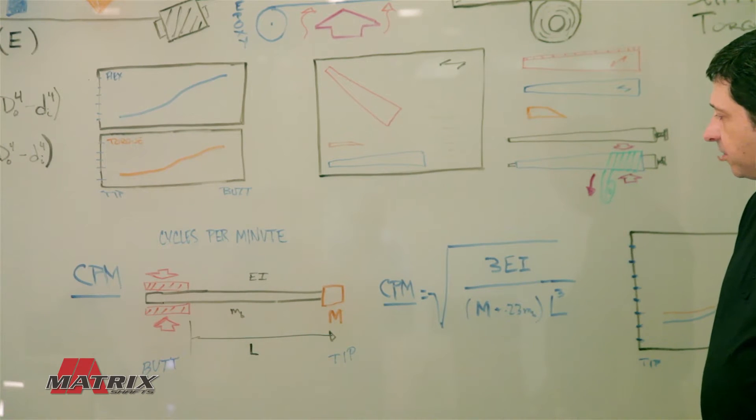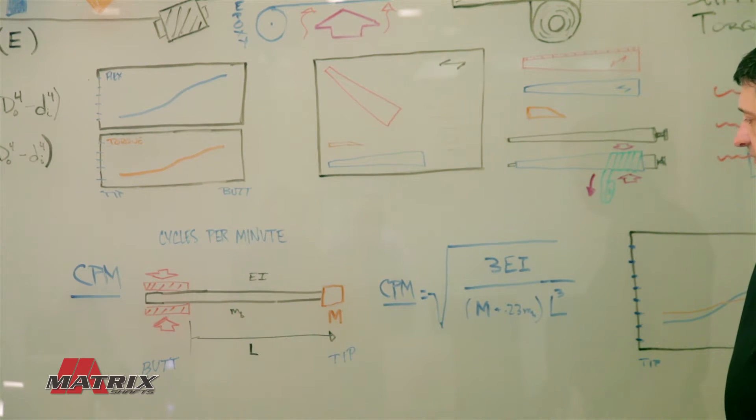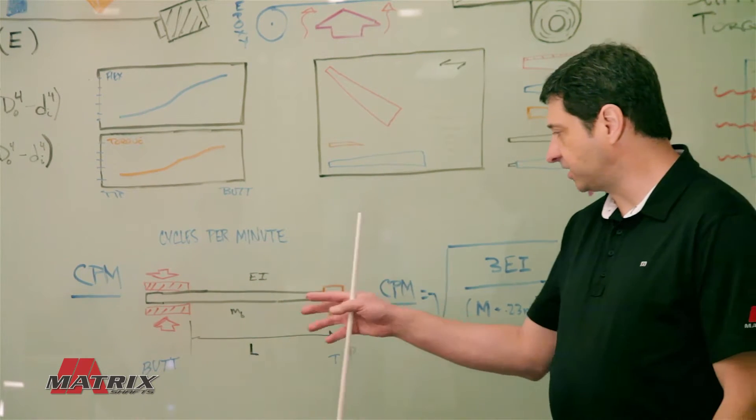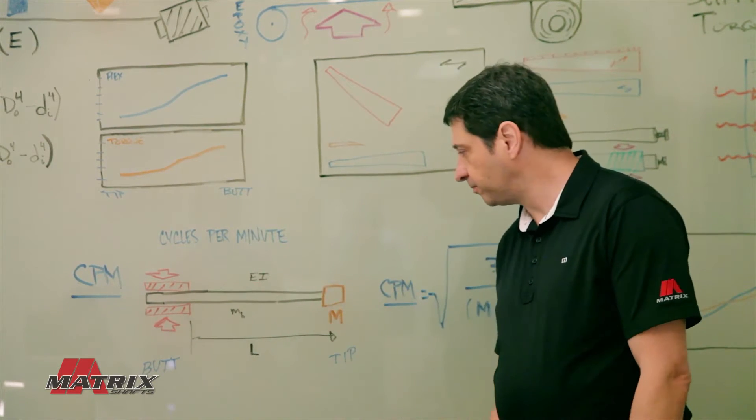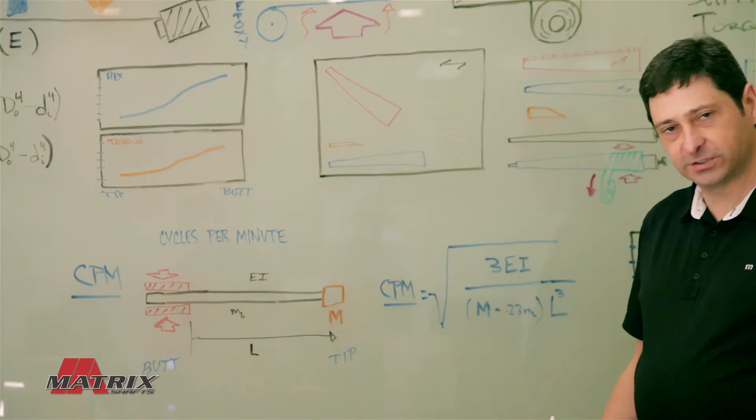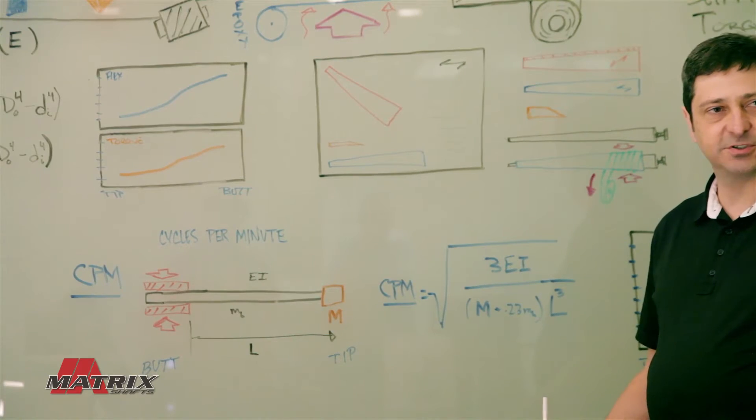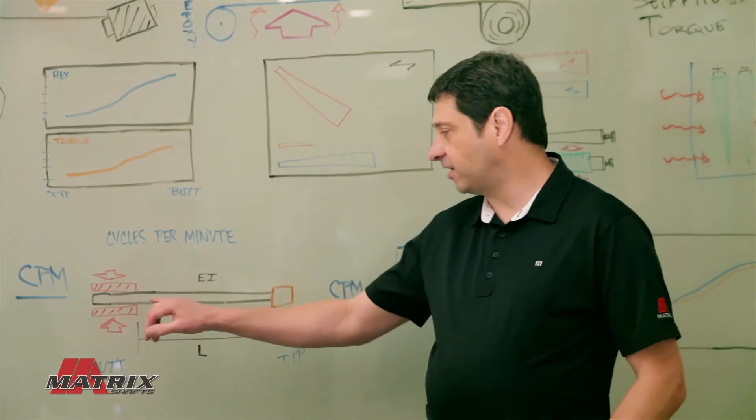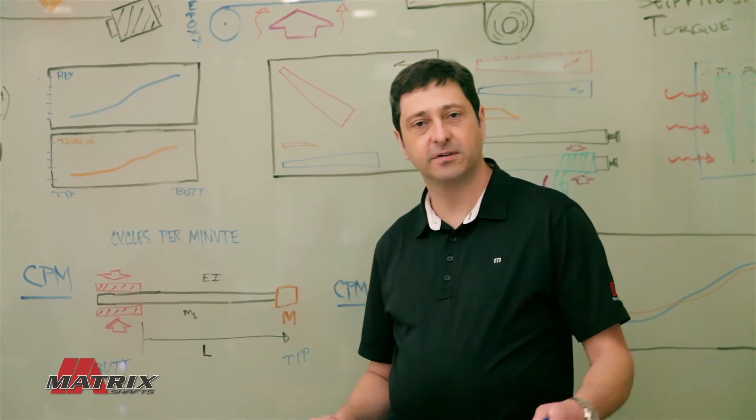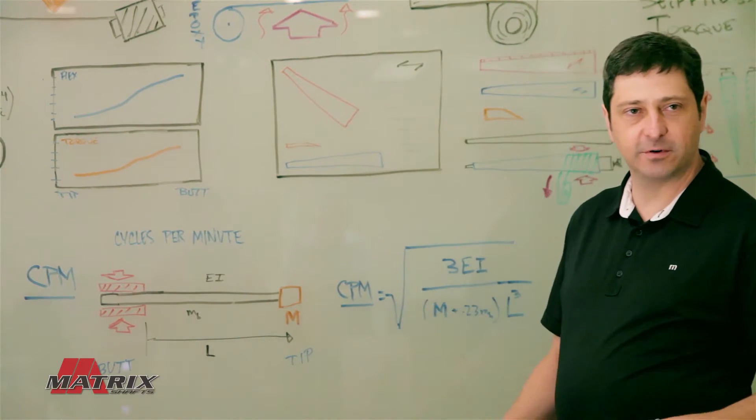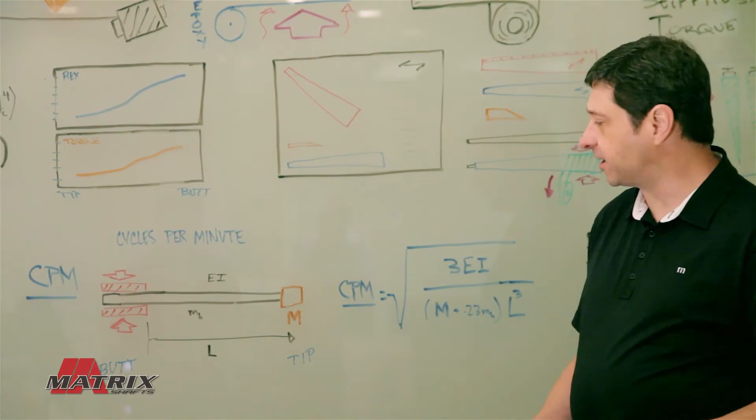The important thing to remember is if you want to compare the true CPM of a shaft, you need to do it in a raw state and without a grip. Unfortunately, there are various different CPM machines out on the market and they all have a different clamp setup. So if you want to compare numbers, make sure you're always using the same setup.